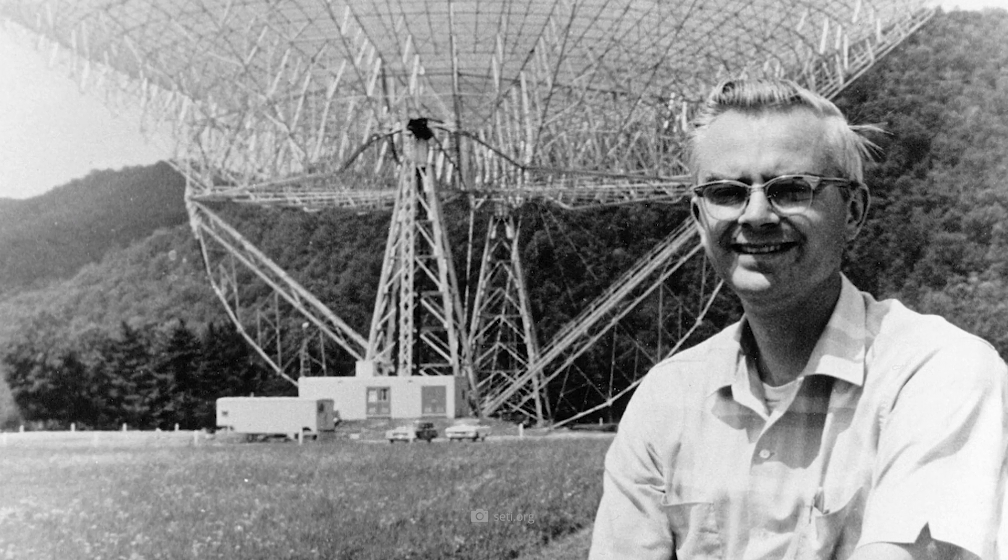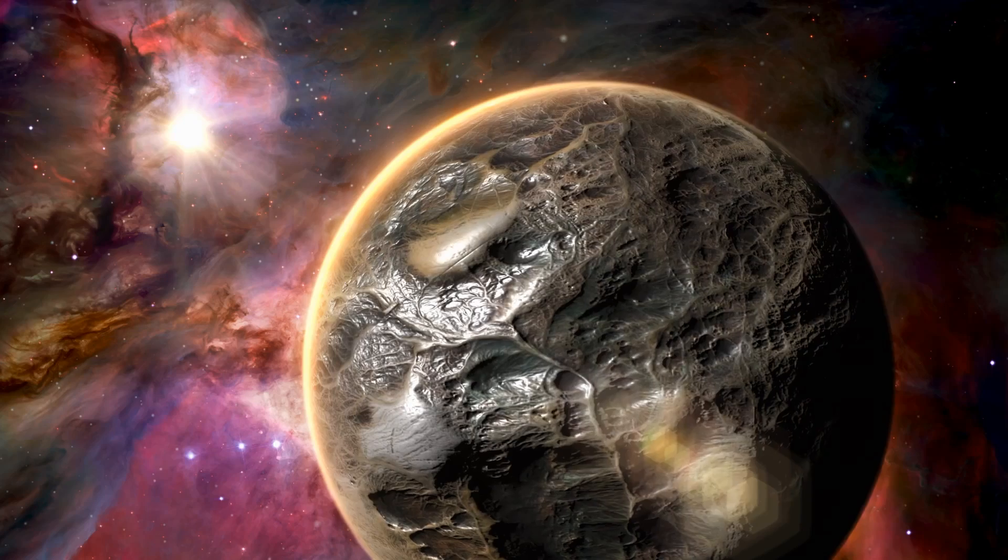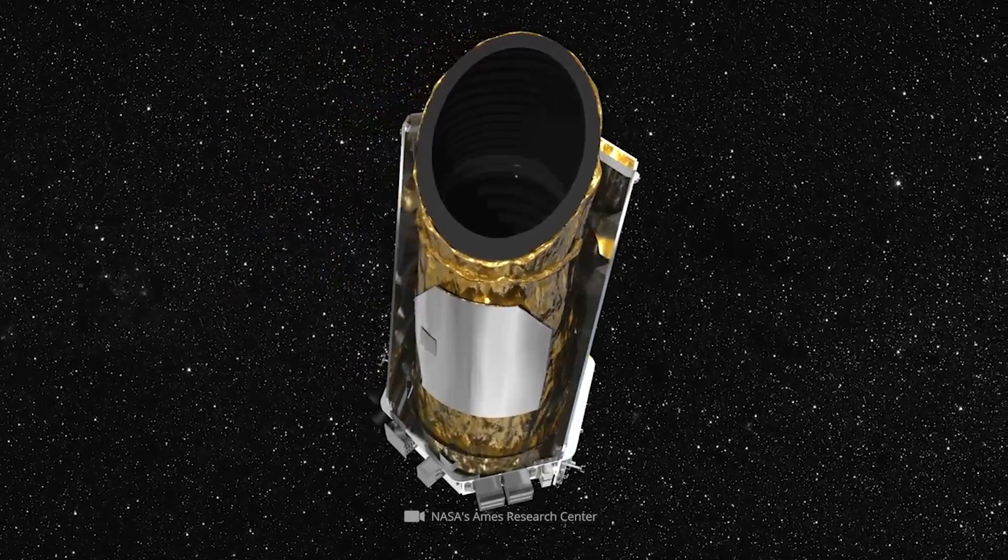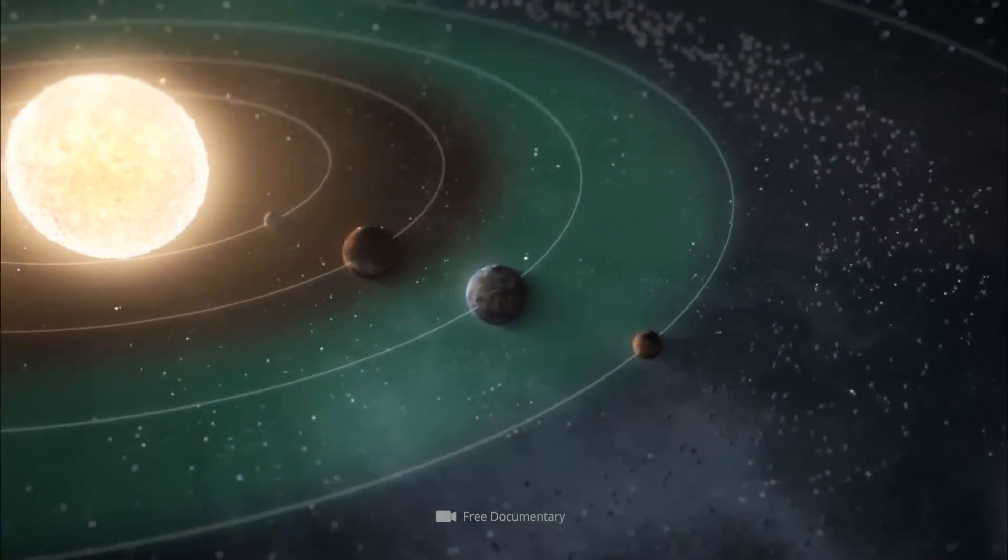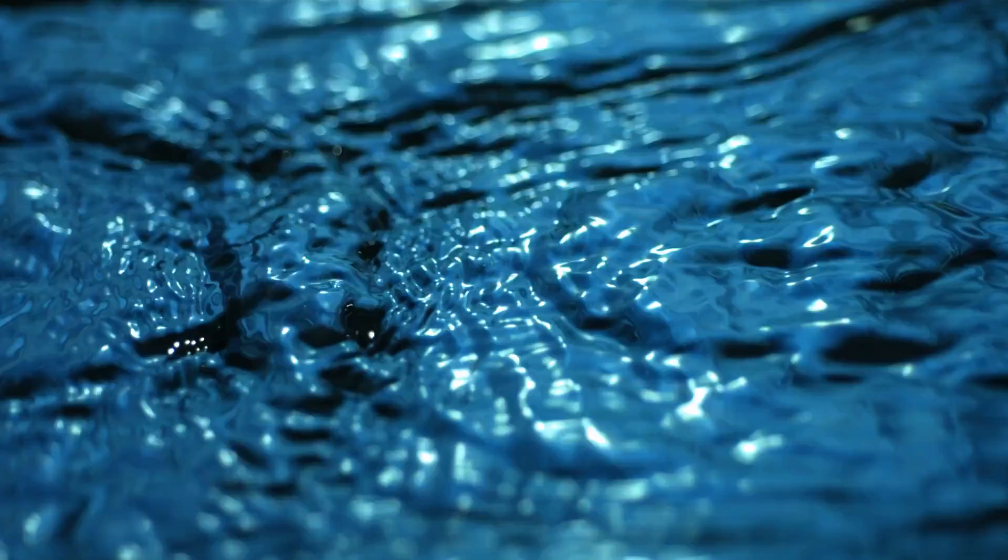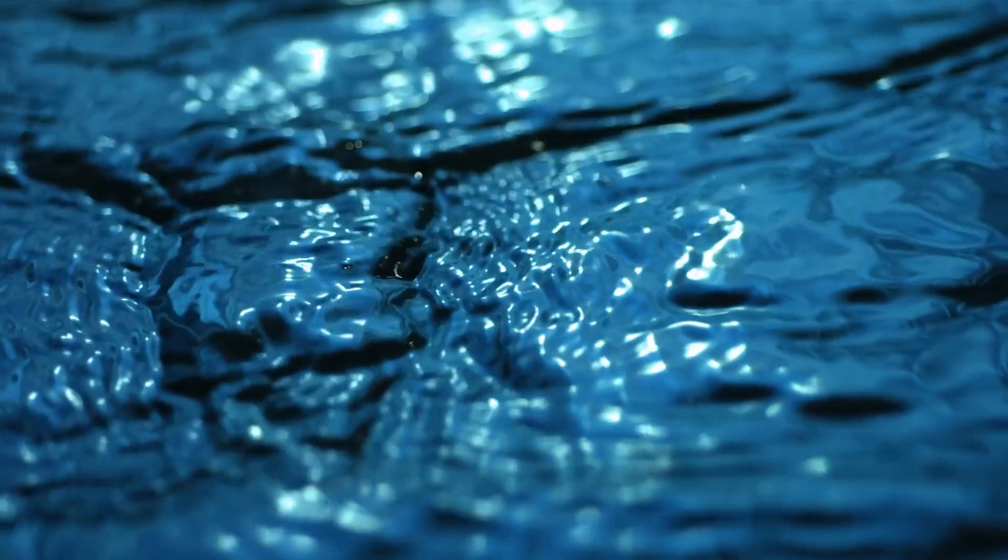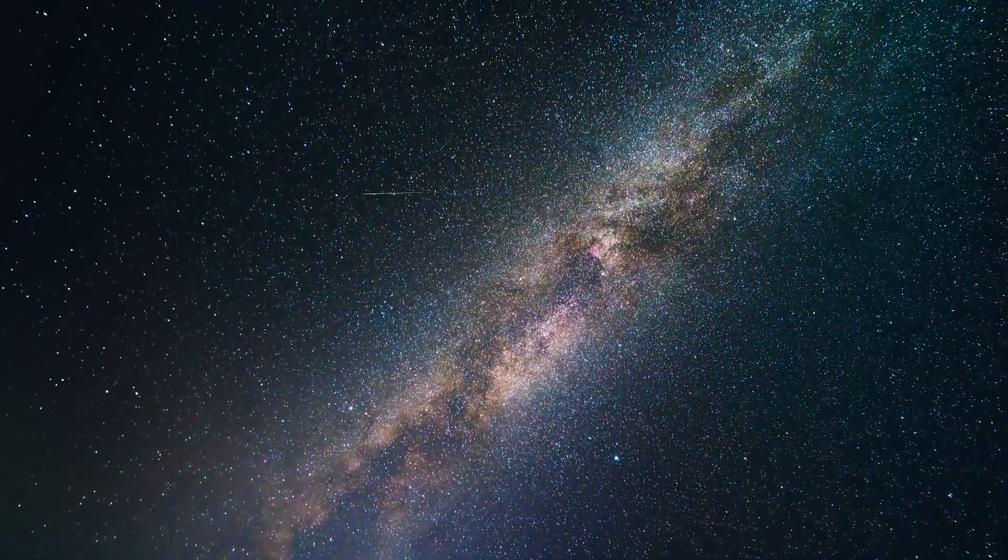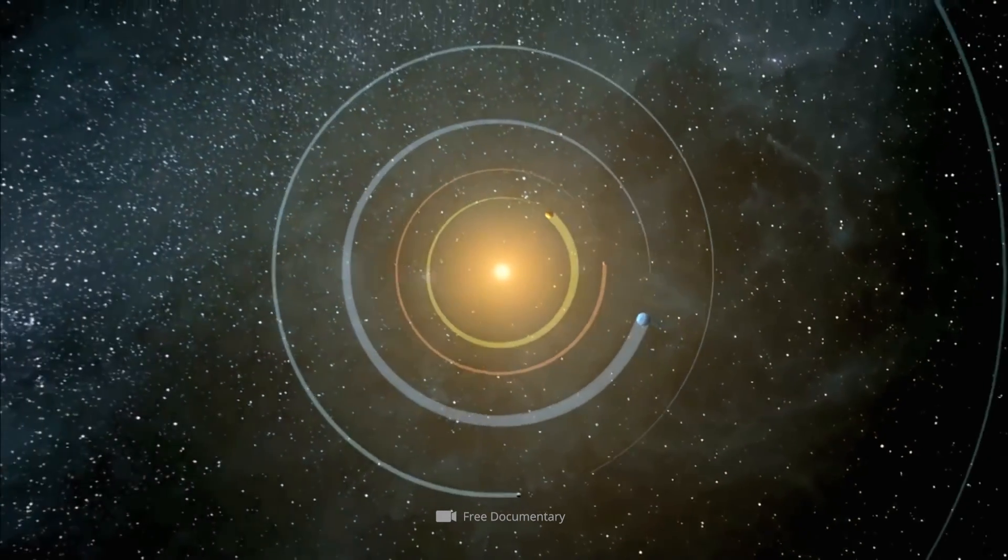This assumption, which Drake made in the early 60s, becomes ever more probable in light of numerous discoveries with modern research equipment. However, not all of these planets would be located in the habitable zones of their ancestral systems, something necessary for water to be present there in a permanently liquid form. Therefore, the Drake Equation is based on the theoretical assumption that each system harbors one to five planets where the right conditions for the development of life prevail.